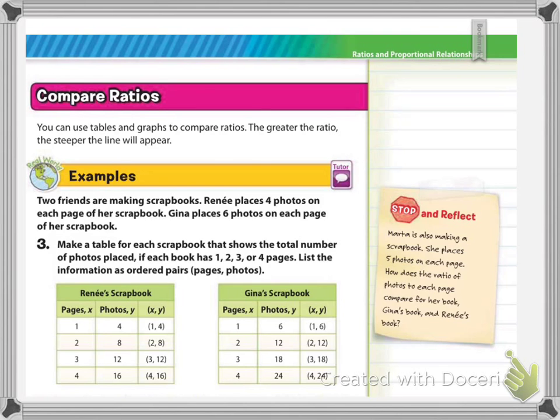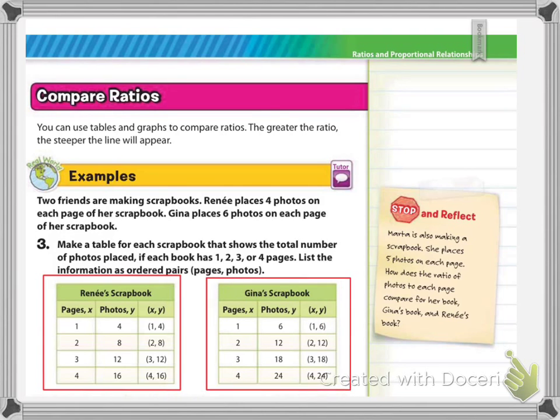So if you look at example three, it says two friends are making scrapbooks. Renee places four photos on each page of her scrapbook. So if you look at Renee's page, graph over here, or table I should say. Her first scrapbook that she does, or the first page, so on one page she puts four photos. That's where they got the one four for the ordered pair (1, 4). So think about it, if she makes two pages, each page is going to have four pictures on it. So two pages will have a total of eight pictures on it. So you get the idea of where they got that. Then it says, Gina places six photos on each page of her scrapbook. So here's her graph, and just like Renee's, when Gina does one scrapbook page, she's got six pictures on it. When she does two scrapbook pages, she's got a total of twelve pictures on it. So that's where those numbers came from there.